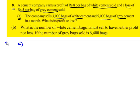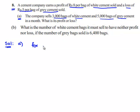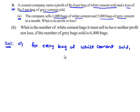We'll see the solution. The profit is Rs.8 per bag of white cement sold. For every bag of white cement sold, the company earns a profit of Rs.8. Since it's a profit, we represent it with a positive symbol.